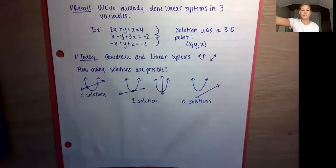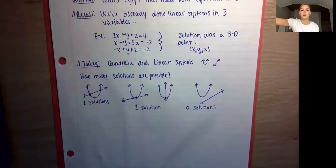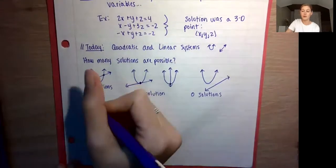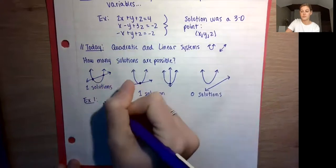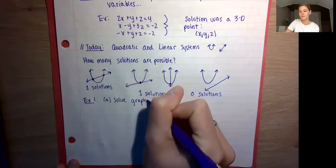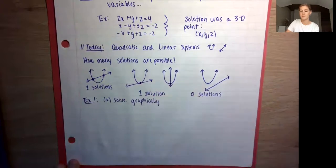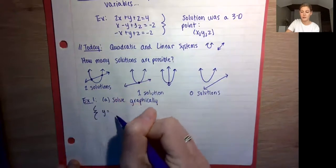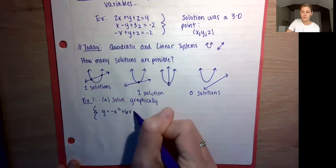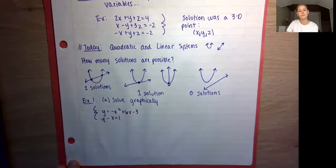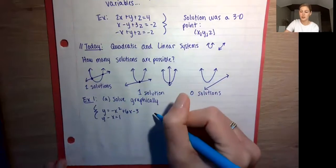Since we're talking about graphs, we're going to look at our first example and solve it graphically. Example 1, Part A says solve graphically. For our system, we have y = −x² + 6x − 3 and y − x = 1.